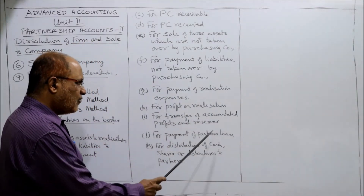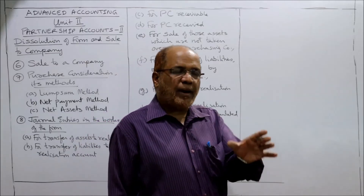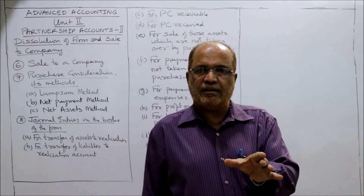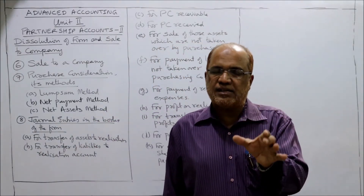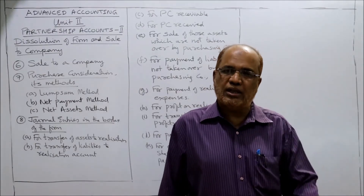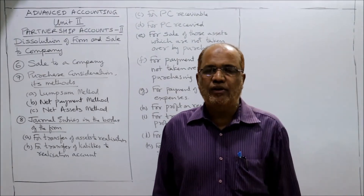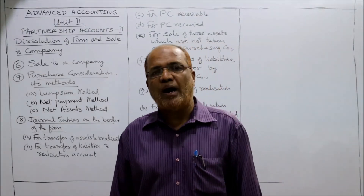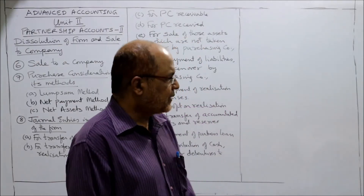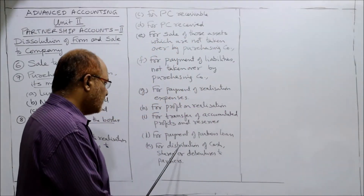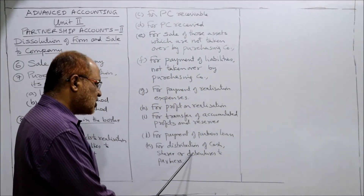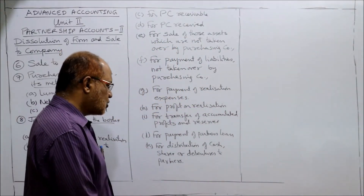Next, for payment of partners' loan: if on the liability side of the balance sheet there is a partners' loan, it will be paid off. Entry: Partners' Loan Account debit to Bank. The last entry is for distribution of cash, shares, or debentures to partners — the purchase consideration is distributed among the partners.